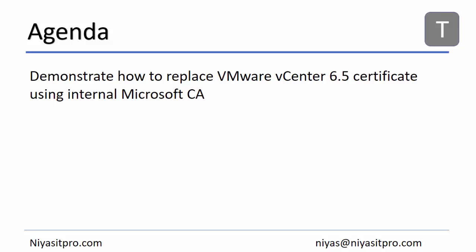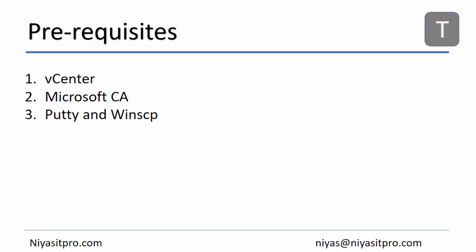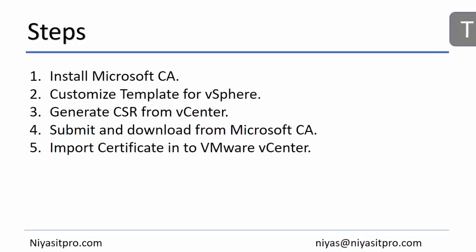Some of the prerequisites are here. You need a vCenter Server, Microsoft Certificate Authority, PuTTY, and WinSCP. For more understanding and easiness, I just split all the steps into five steps. The first one is to install Microsoft Certificate Authority. In the second step, we will customize the template for vSphere as per VMware vSphere standard. In the third step, we will generate a certificate signing request (CSR) from vCenter and then submit that CSR into Microsoft Certificate Authority. Once we download the certificate from Microsoft Certificate Authority, we will import it into VMware vCenter.